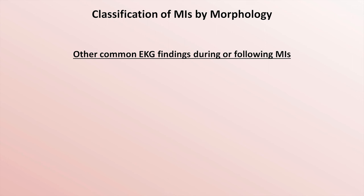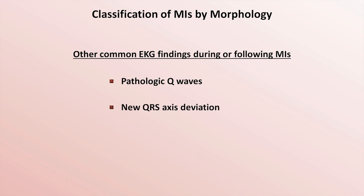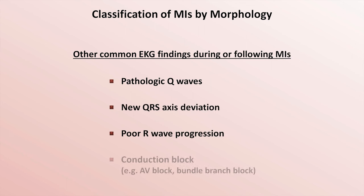In addition to the distinction between presence or absence of ST elevations, other common EKG findings during or following an MI include pathologic Q-waves, new QRS axis deviation, poor R-wave progression, and various types of new conduction blocks, such as AV block or bundle branch blocks.